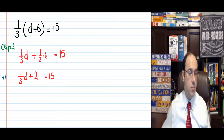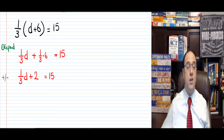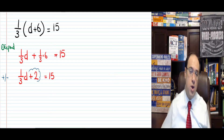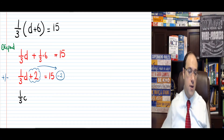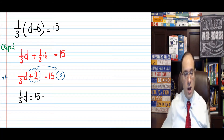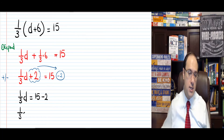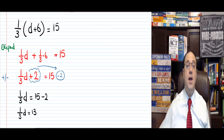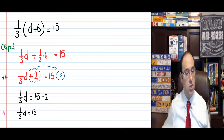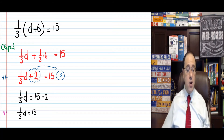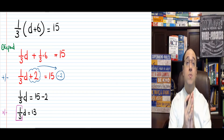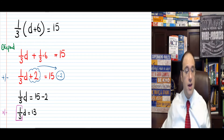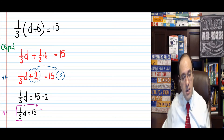First, get rid of any pluses or minuses with the variable d. What is the plus or minus I have here? I have plus 2. I want to get rid of it — it moves to the other side as minus 2. Now we can rewrite: 1/3 d equals 15 minus 2, which means 1/3 d equals 13. Now what do we do? We need to get rid of the multiplication or division with d. Here I have 1 over 3 — I consider it one number — times d, which means d times 1 over 3. So it's multiplication on the left, moves to the other side as divided by 1 over 3.